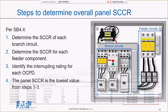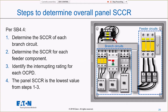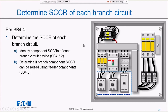We are finally done with definitions and can calculate the overall panel short circuit current rating. To determine it, I have four steps: Step 1, determine the SCCR of each branch circuit. Step 2, determine the SCCR for each feeder component. Step 3, identify all interrupting ratings inside the panel. Step 4, pick the lowest value from steps one through three — that is the panel short circuit current rating. Step 1 is by far the most complicated and has two parts.